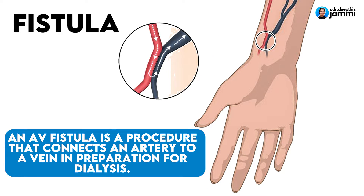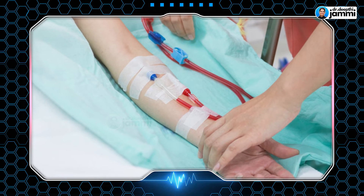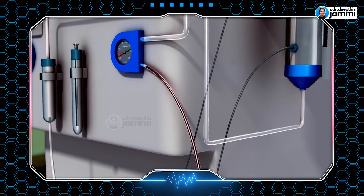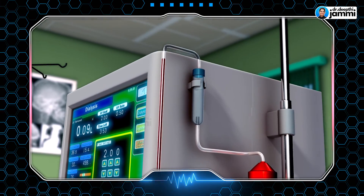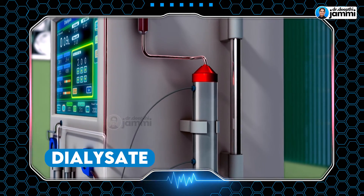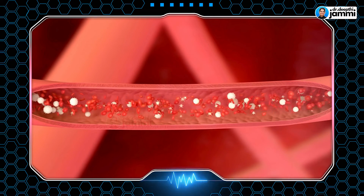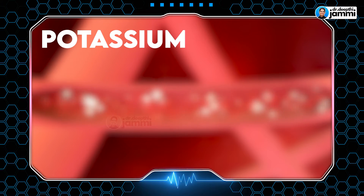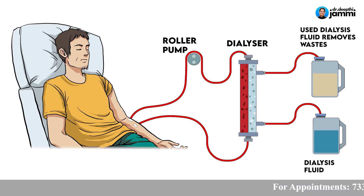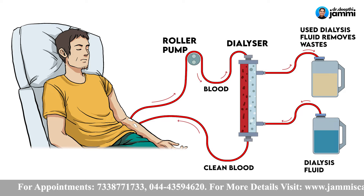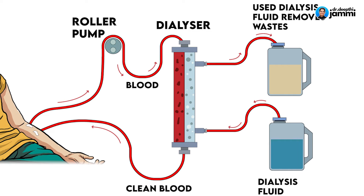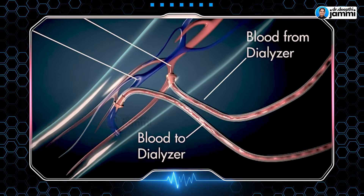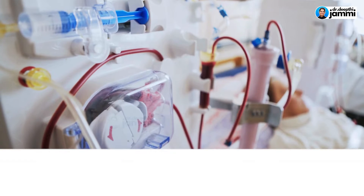Once the vascular channel is established, a tube is connected to the dialysis machine. Inside the machine, there is a dialysis solution — called the dialysate. The blood passes through and mixes with this solution. The dialysate absorbs excessive urea, potassium, excess water, and other waste products and toxins from the blood. The fresh, filtered blood is then returned to the body through the vascular channel. This is the process of hemodialysis.